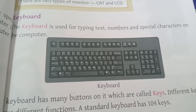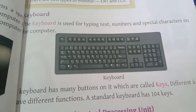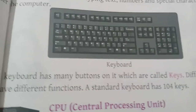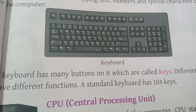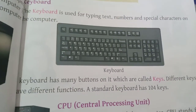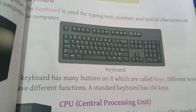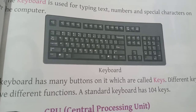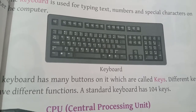Numbers on the keyboard go from 0 to 9. The keyboard has many buttons on it, which are called keys. Different keys have different functions. For example, pressing the A key types the letter A, and we can see it on the monitor. A standard keyboard has 104 keys.